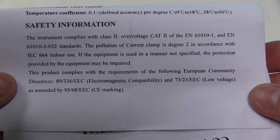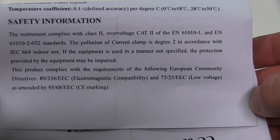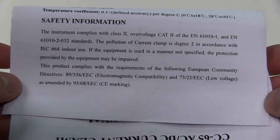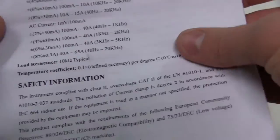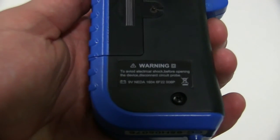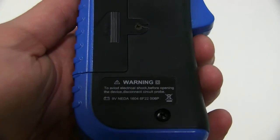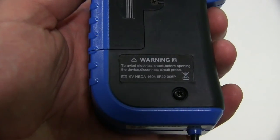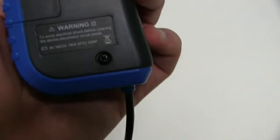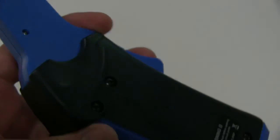So in the safety information, it says it complies with Class 2 overvoltage Cat 2. So it's a Cat 2 rated device. And basically, there's a warning sticker on the device that just tells you don't pull the thing apart if you've still got it plugged in measuring. Because obviously, if you're clamping on a cable and you're inducting current off of that, you can get some high voltages and it can be dangerous. So unplug before you tear it down, I suppose.